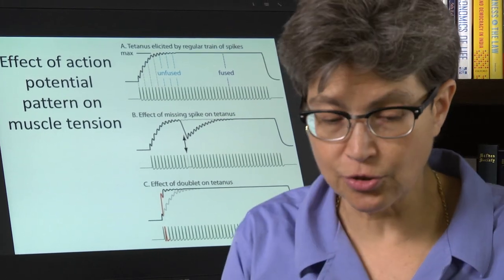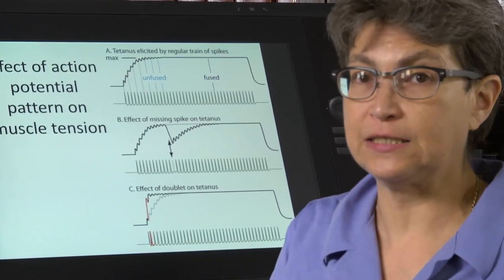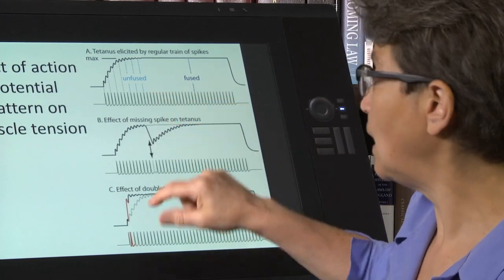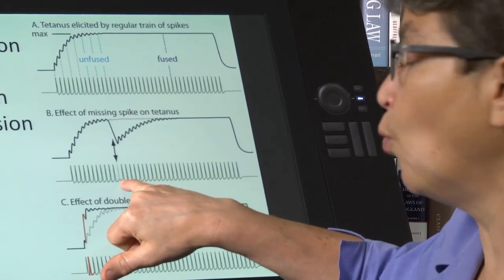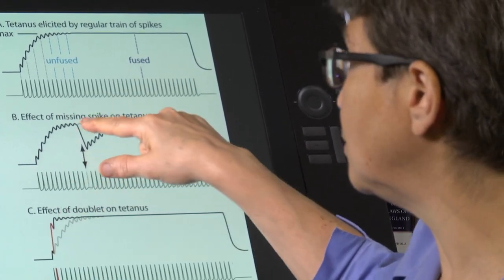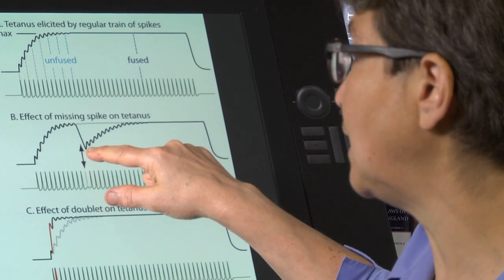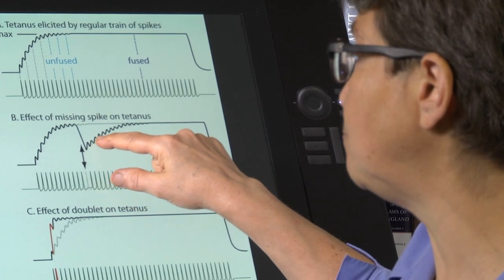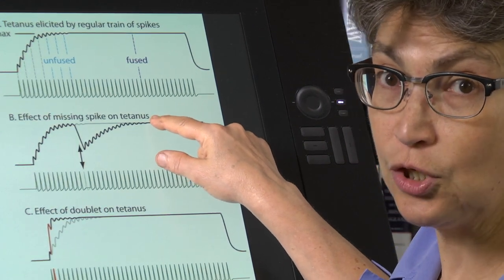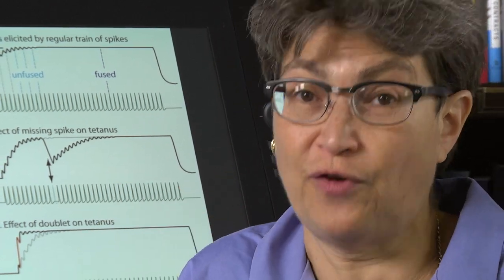Now let's consider what's the effect of missing one action potential. And what you see here is the effect of missing one action potential in this train. And what does it do? It takes you out of tetanus and it puts you back on this really slow rise back up to tetanus. So you wouldn't think it would have such a huge effect. It has a huge effect.